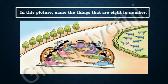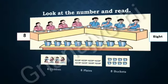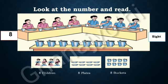In this picture, we can see 8 trees, 8 sheeps, 8 peoples. Now look at the number and read. In this picture, we can see 8 children, 8 plates, 8 buckets.